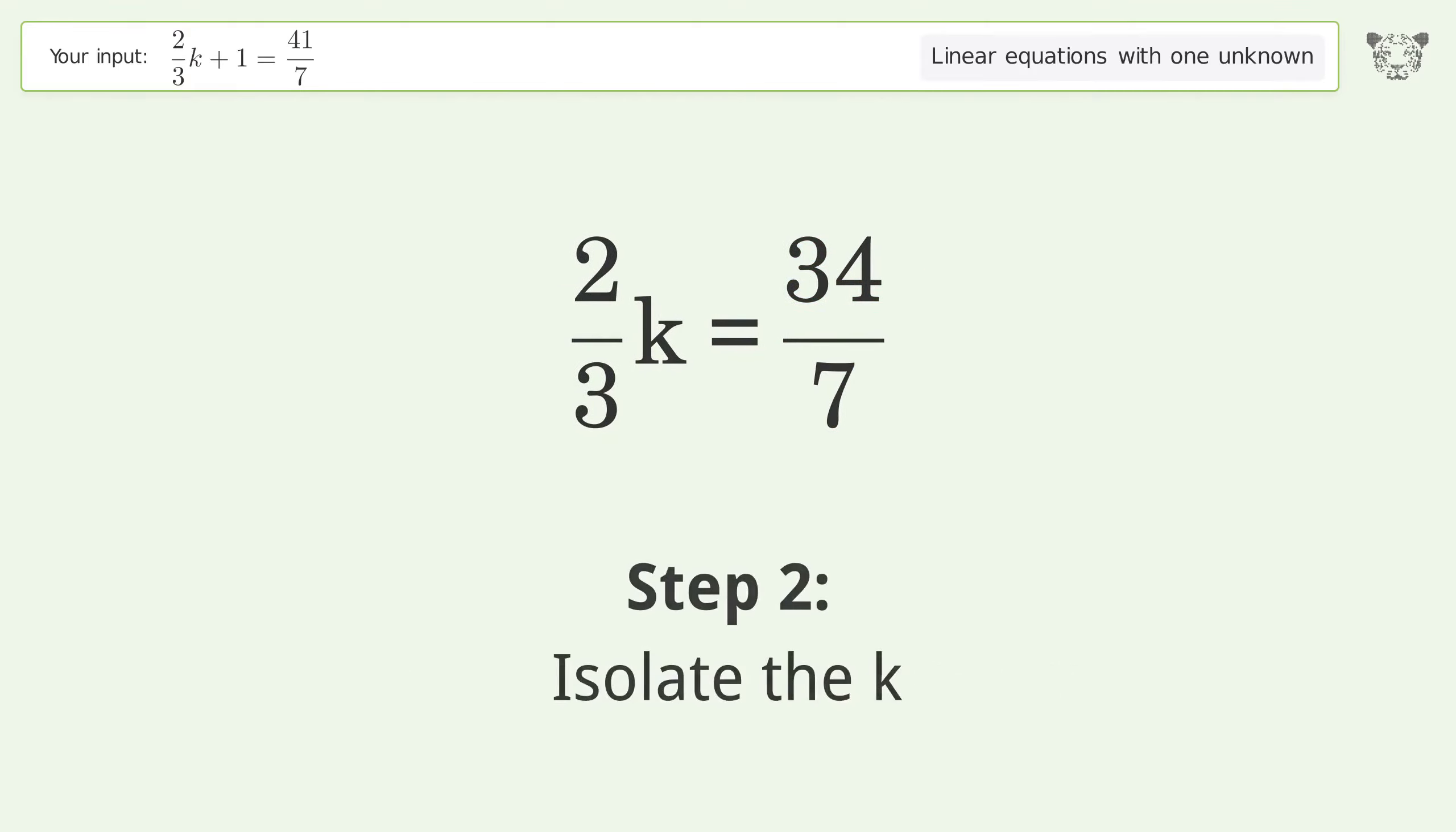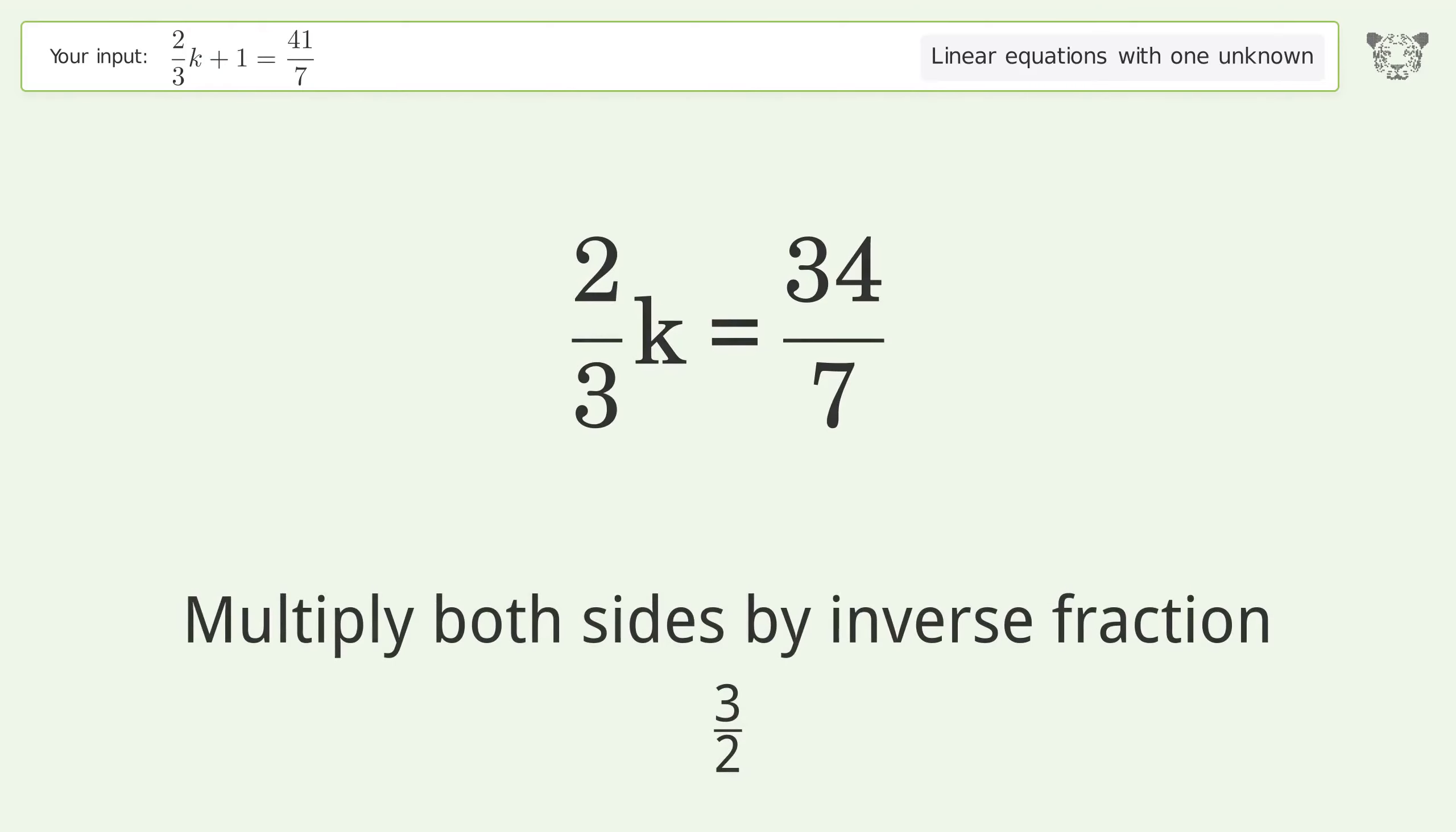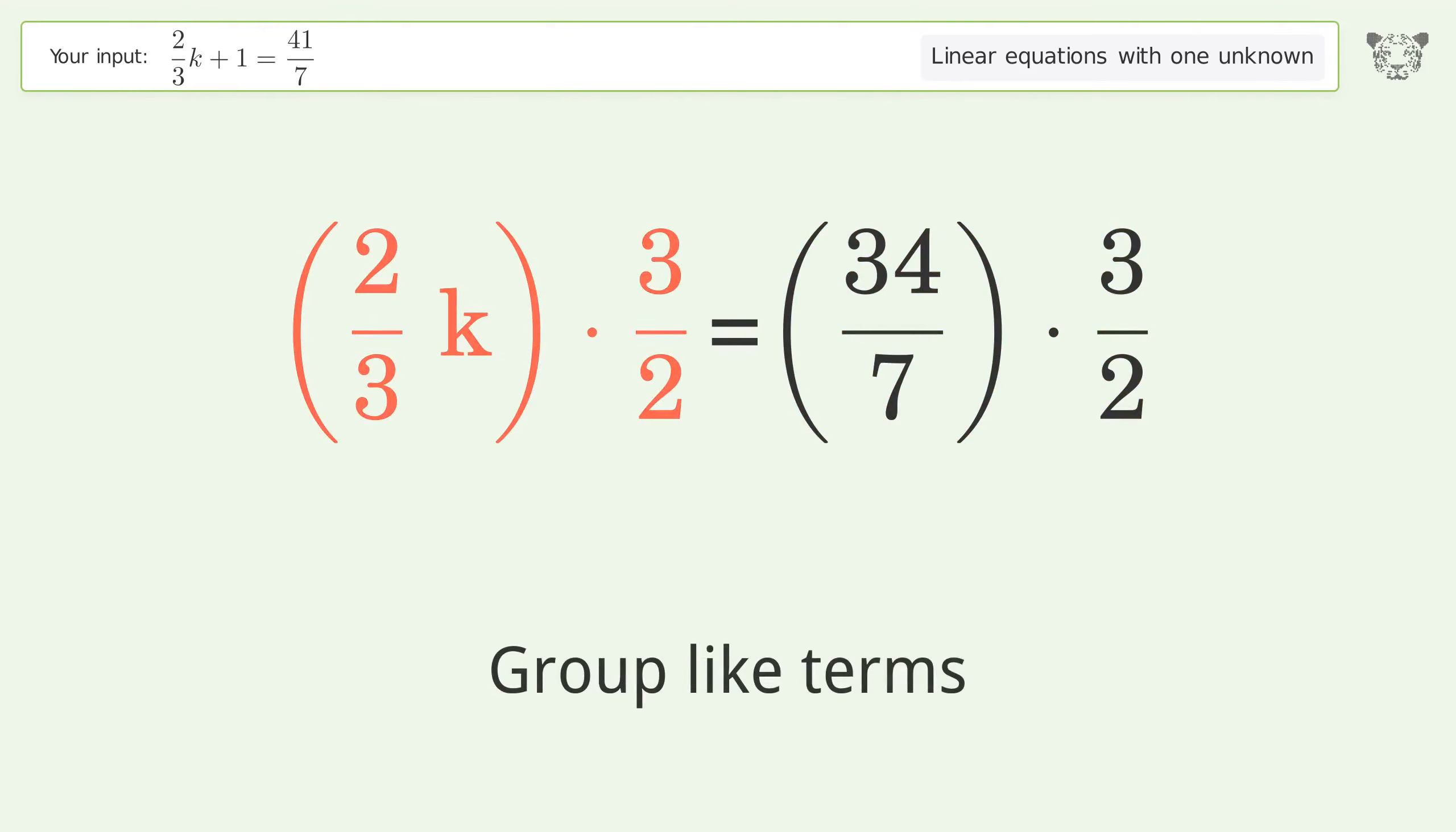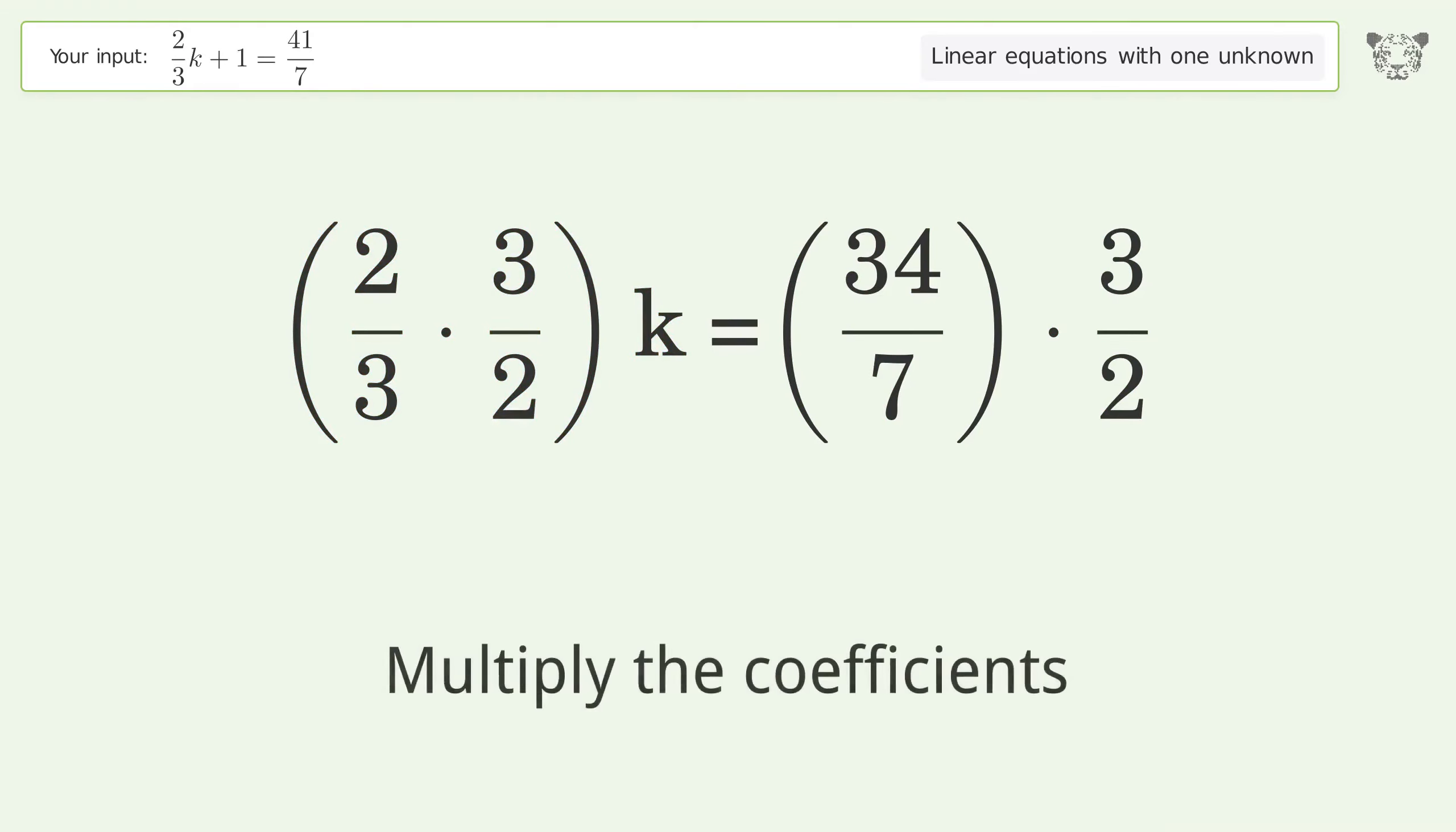Isolate the k. Multiply both sides by the inverse fraction 3 over 2. Group like terms. Multiply the coefficients.